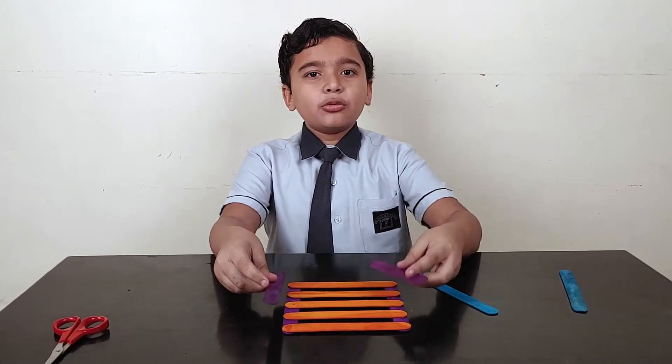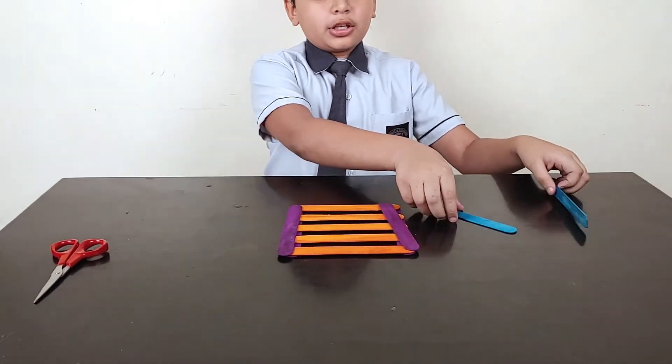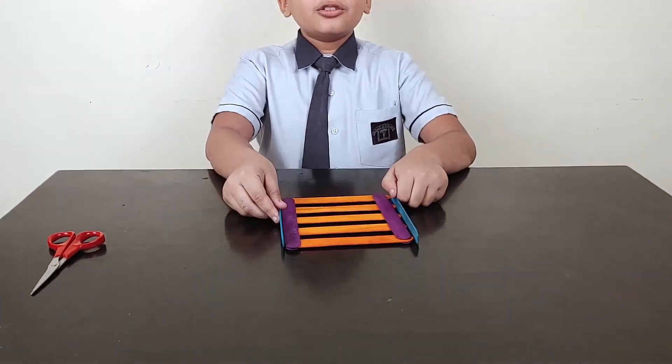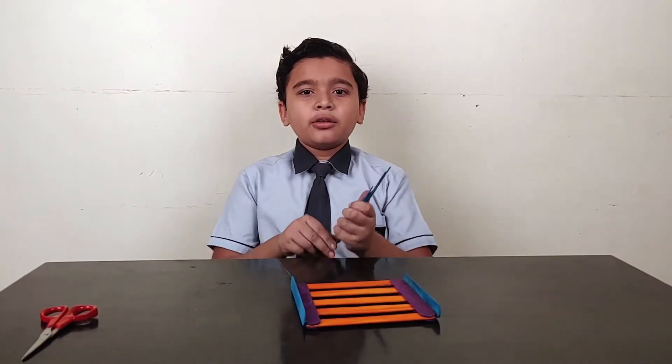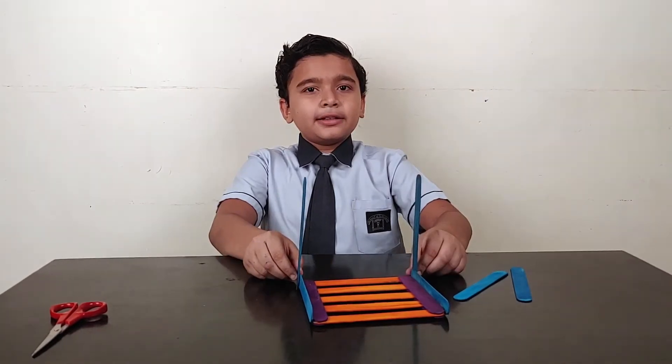I made the structure like this. Then add 2 more ice cream sticks here and 2 more ice cream sticks outside. So the structure will get strength. Now take 4 more ice cream sticks and paste it on one on each corner in this manner.